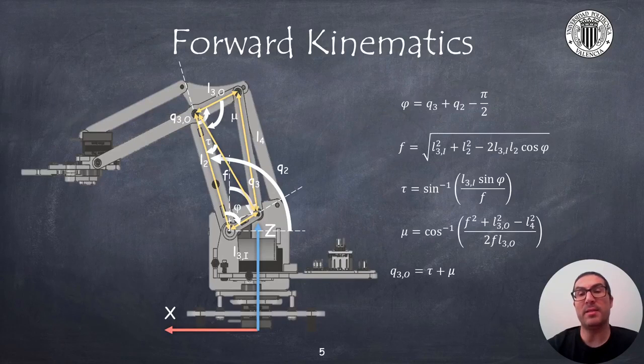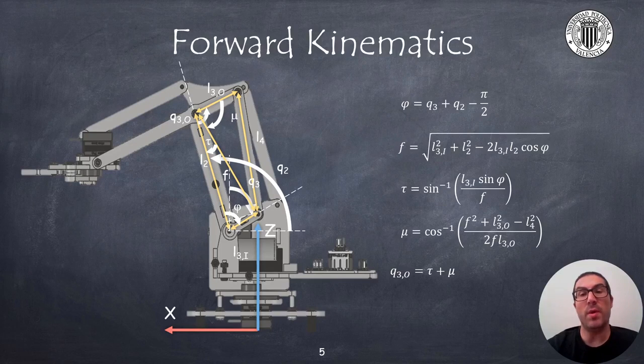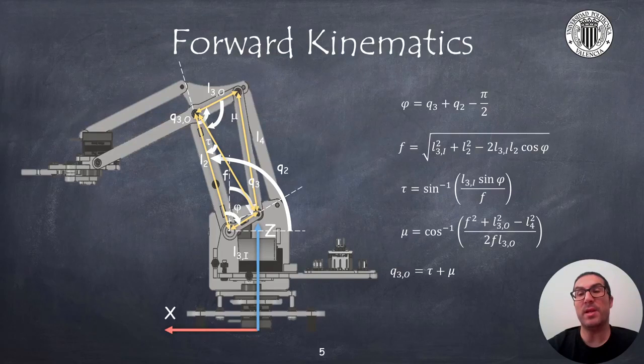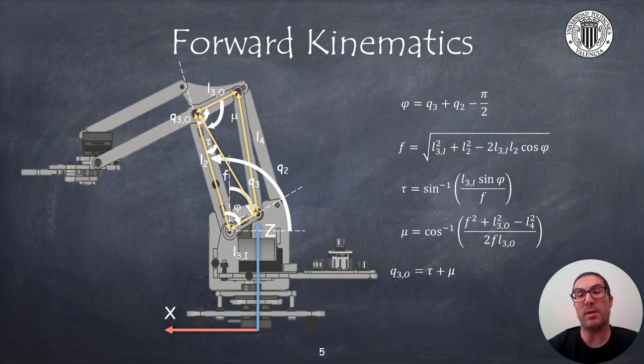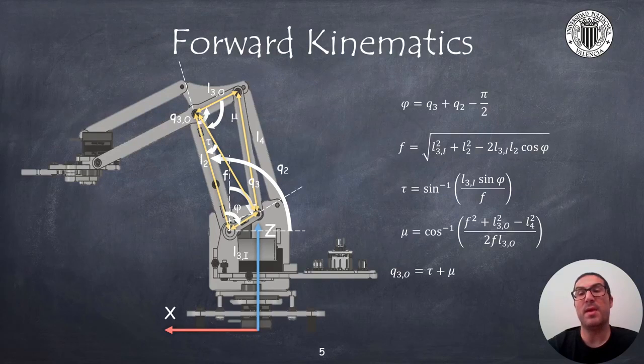Here, I highlight the main elements of these forward linkage mechanisms to compute the angle q3o. So, we must first compute the angle phi from the linear relation with the angles q2 and q3, as shown in the formula. Then, once the phi angle is known, we can compute the diagonal distance f using the cosine theorem.